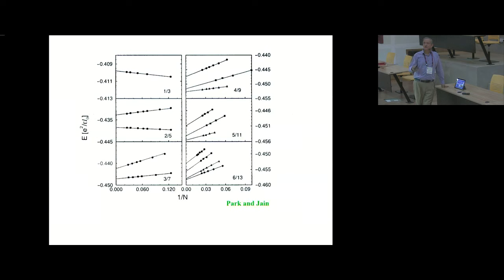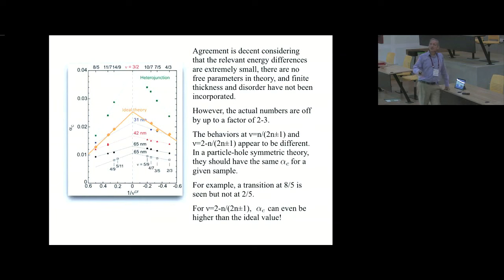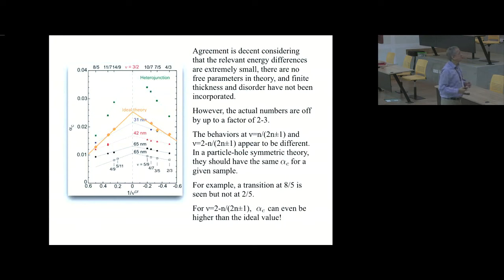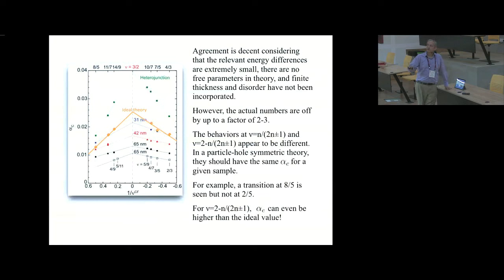Doing this for many different states — this is the ideal theory not including finite quantum well width and Landau level mixing — at one level it's pretty good: the numbers fall on the same plot and roughly give the correct order of Zeeman energy. But nonetheless, looking at the numbers, there can be a discrepancy of up to a factor of two to three. A theory with particle-hole symmetry would predict that two states related by particle-hole symmetry have the same critical Zeeman energies for a given sample. That's not the case experimentally.